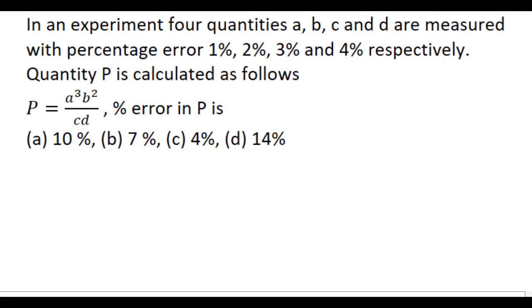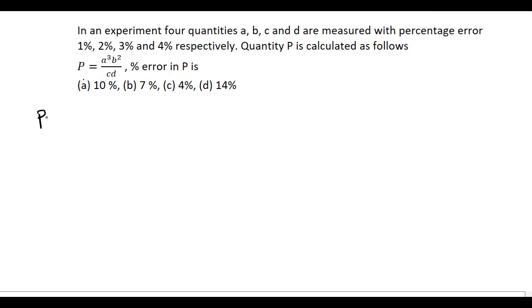Percentage error in P is to be found. So here P is given by A cubed B squared divided by CD. All the percentage errors of A, B, C, D are given, we have to calculate the percentage error in P.